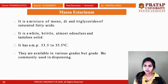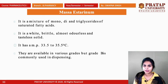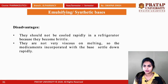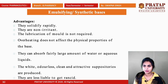Massasterinum is a mixture of mono-, di-, and triglycerides of saturated fatty acids — a combination of three glycerides. Its physical appearance is white in color, brittle in nature, and almost odorless — a tasteless solid. The melting point of massasterinum is 33.5 to 35.5 degrees Celsius. It is available in various grades, but one grade is commonly used in dispensing.